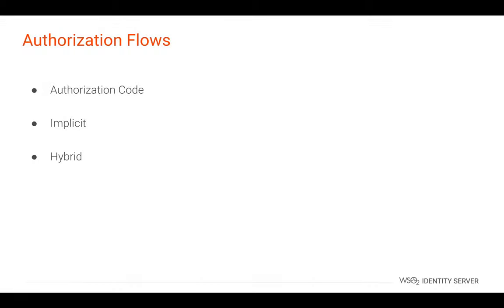The OIDC specification defines three main flows which can be used in different scenarios. Those are the authorization code flow, implicit flow, and hybrid flow, which we will discuss in detail in later videos.